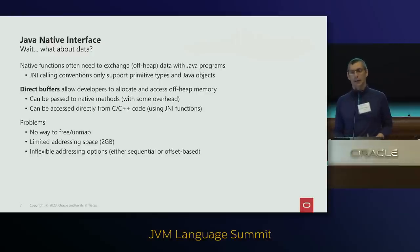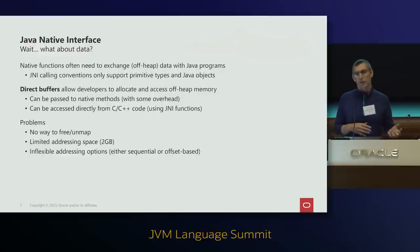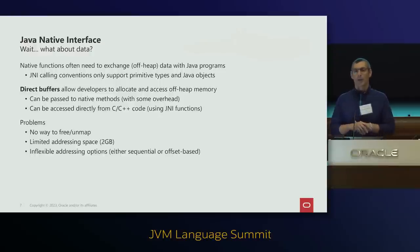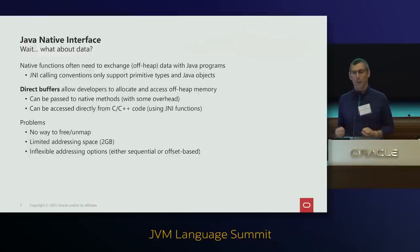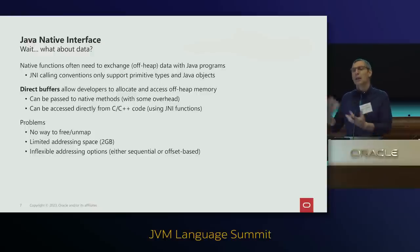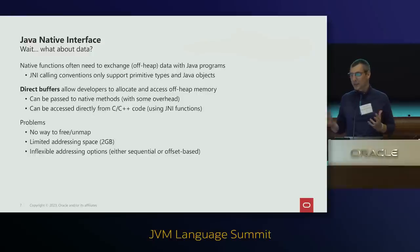We haven't even started talking about data. JNI has limited options when it comes to passing things to native methods. Native functions more often than not need to interact with off-heap memory. The Java SE API has an API called ByteBuffer that allows us to access off-heap memory. Direct buffers are ByteBuffers backed by off-heap memory, allocated by Java programs, with the garbage collector freeing the memory when it's no longer reachable.